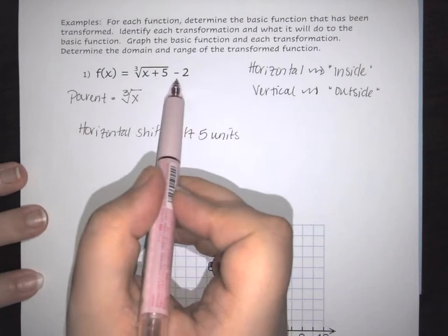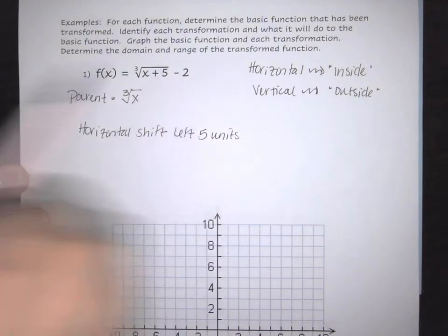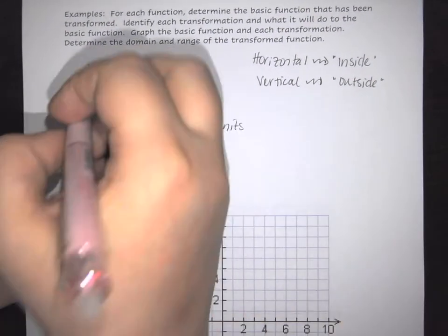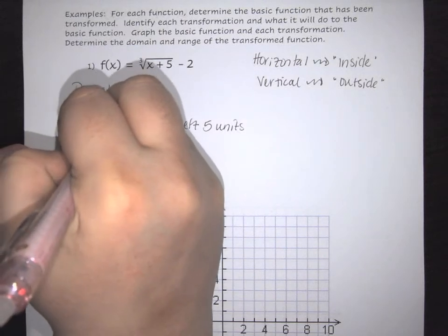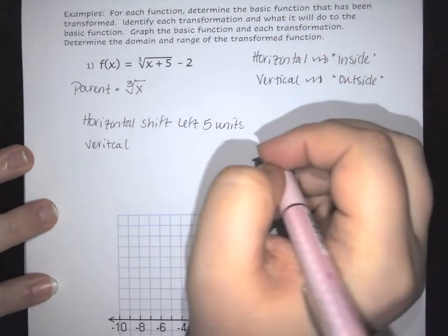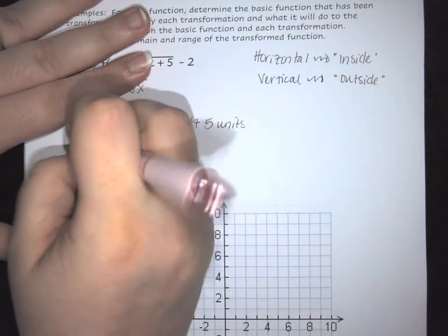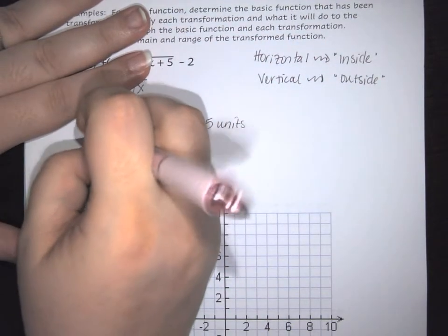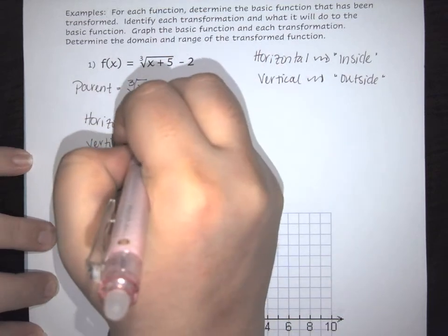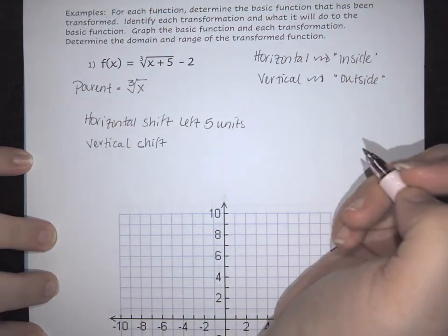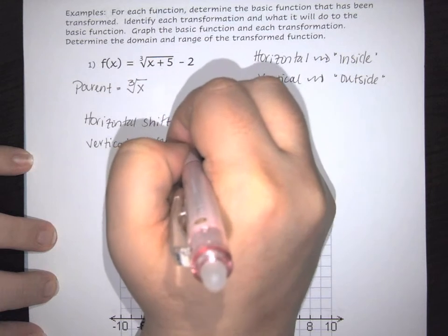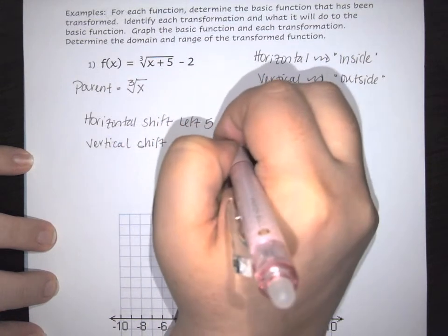The minus two is on the outermost side of the radical, so this is a vertical shift. Because we're subtracting, we are going to shift down two units.